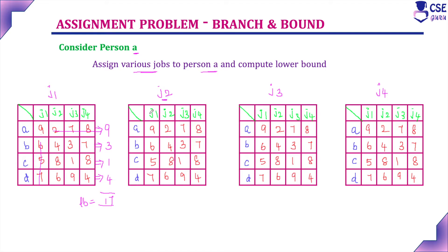Assigning job 2 to person A: the cost is 2. Excluding the same row and same column, for person B the least available cost is 3, for person C it is 1, and for person D it is 4. The lower bound value for this assignment is 10.